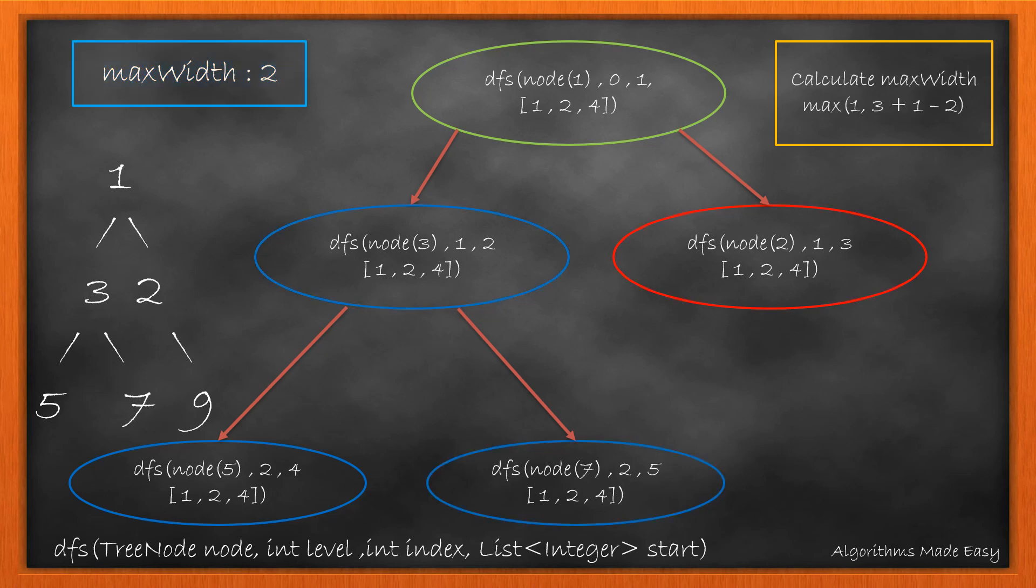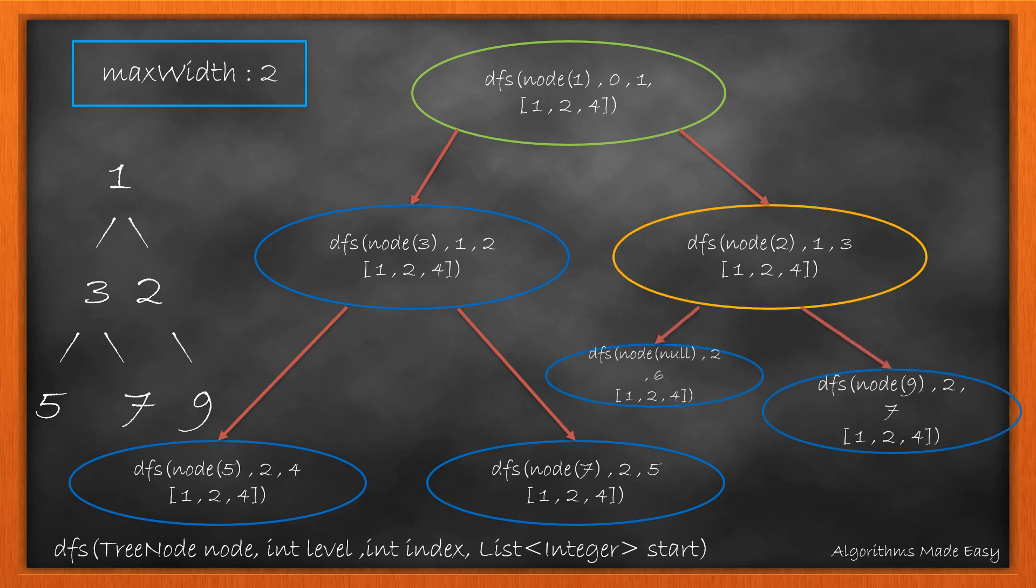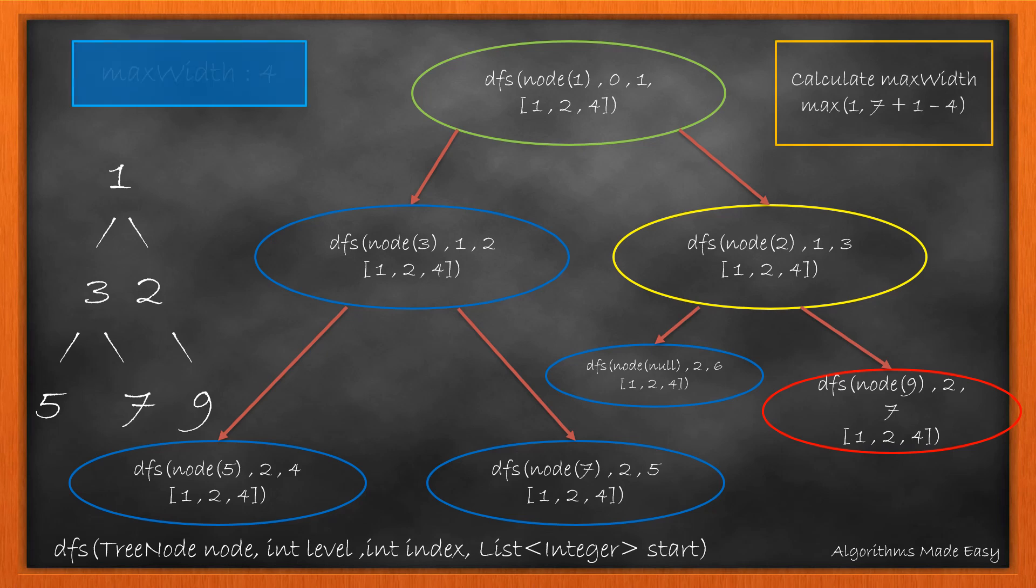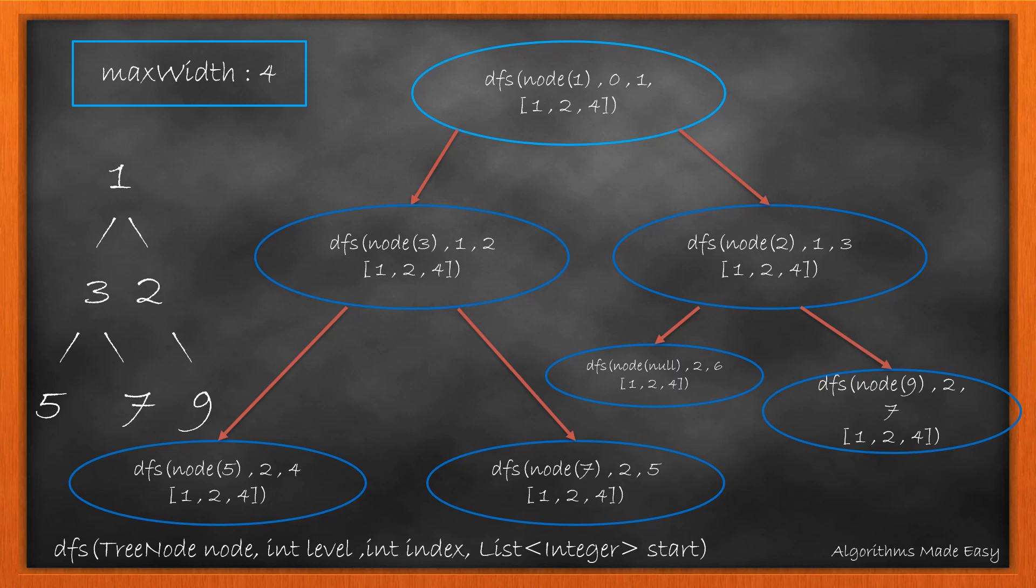Now as we have completed the calculations in the left subtree, we move to the right subtree and perform the same. For this node, we will call the DFS on its left and right node. As the left node is null, so the max width remains same. Now we go to the right node and calculate the max width. The max width now gets updated to 4. This completes our iteration on the tree and we return the max width.